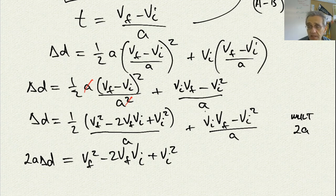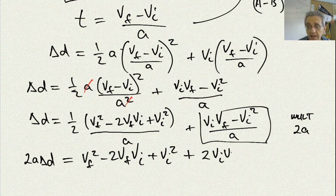Now, this term here, I have to multiply by 2a. The a's cancel out, but I still have to multiply by 2. So I get 2vi-v-f minus 2vi squared.